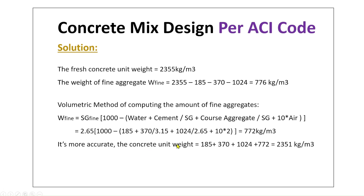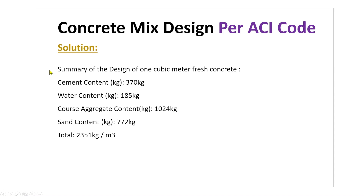The concrete unit weight is the sum of water, cement, coarse aggregate, and fine aggregate, equaling 2,351 kg/m³. Summary by volumetric method: cement = 370 kg, water = 185 kg, coarse aggregate = 1,024 kg, sand = 772 kg; total fresh concrete for one cubic meter = 2,351 kg.